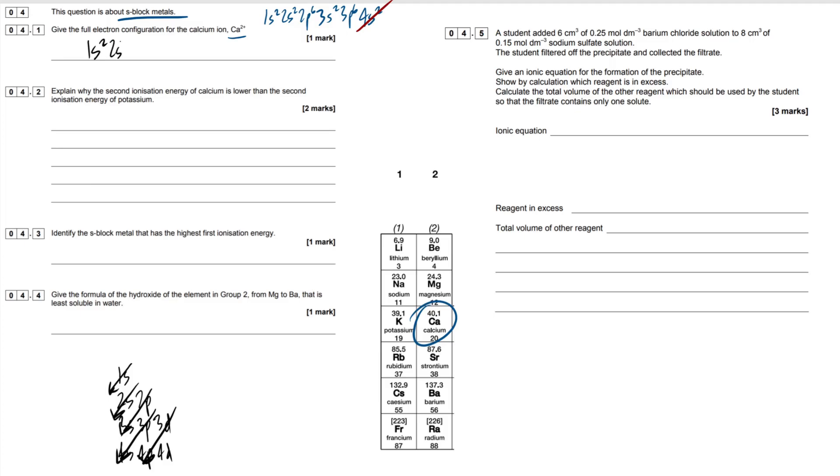Hopefully that makes sense, makes it pretty simple. 1S2, 2S2, 2P6, 3S2, 3P6, 4S2. Now, we don't want the 4S2, we just kick them off. So simple as that. That'll be our first mark right there, mark on the board.